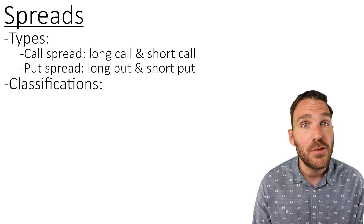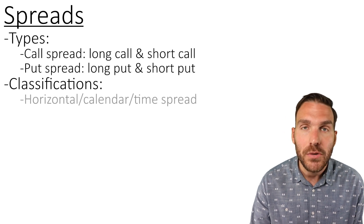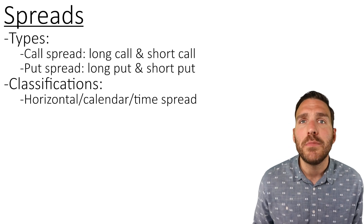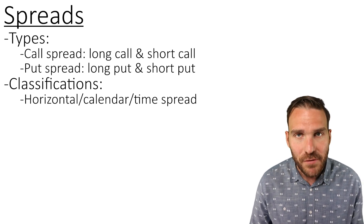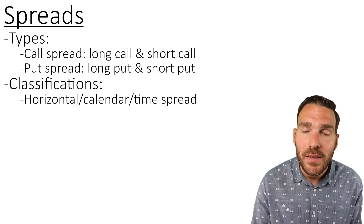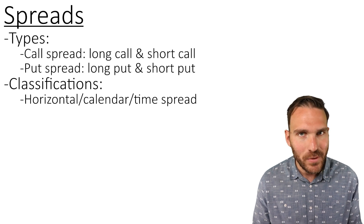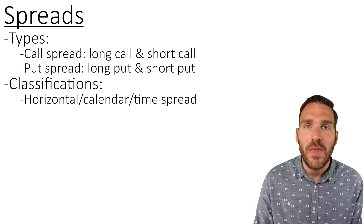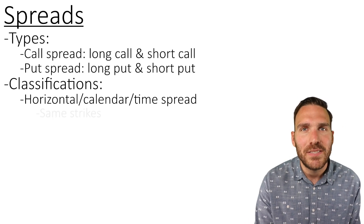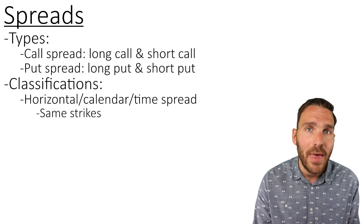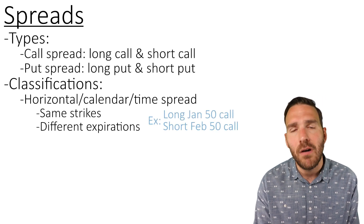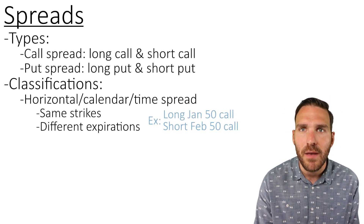The first classification has three names: horizontal, also known as a calendar, also known as a time spread. When we say calendar or time spread, that should be a signal that the differences will be with the expirations — that's where the time is brought into play. A horizontal, aka time spread, is when we have the same strike price across both legs but different expirations. An example would be a long Jan 50 call and a short February 50 call.